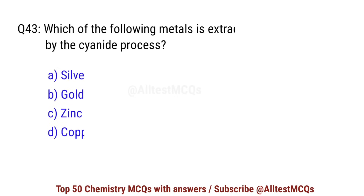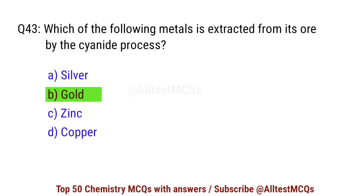Question number 43. Which of the following metals is extracted from its ore by the cyanide process? Correct option is B: gold.